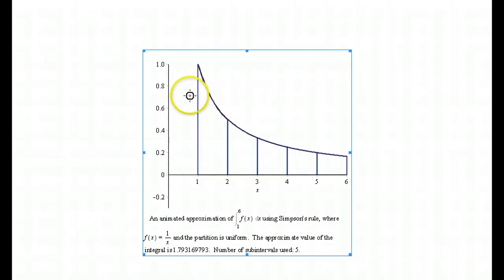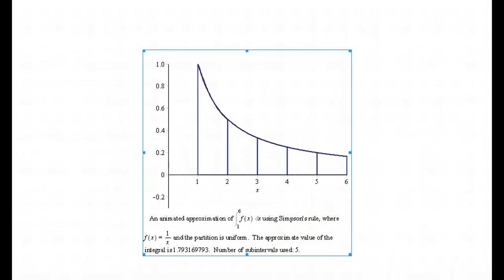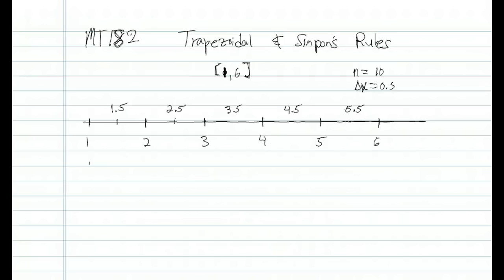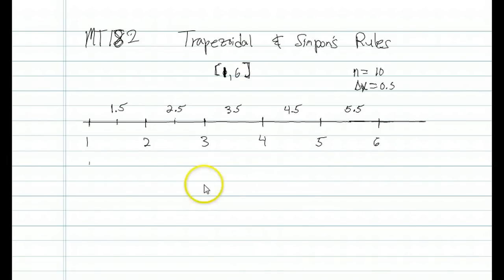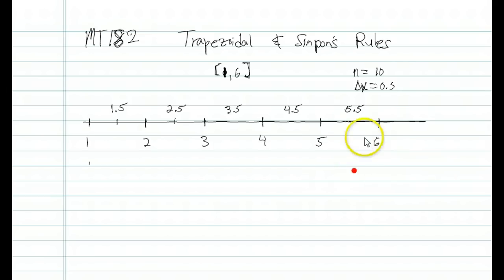For Simpson's rule you do have to do a little bit more work. Let's explain how that works. We're looking at the interval from 1 to 6, our function is 1 over x, and we're splitting it up into 10 pieces — 10 subintervals.